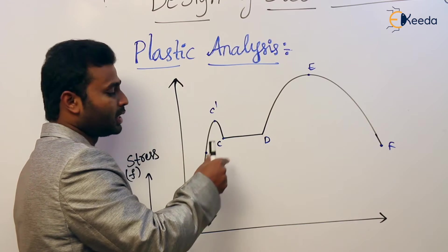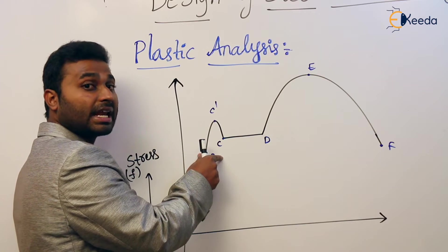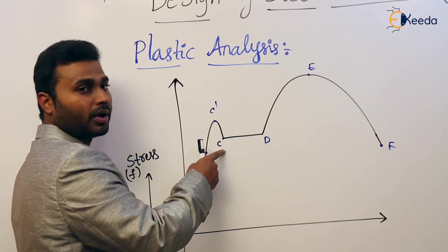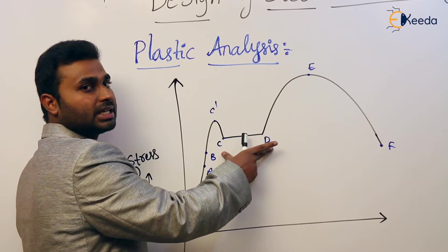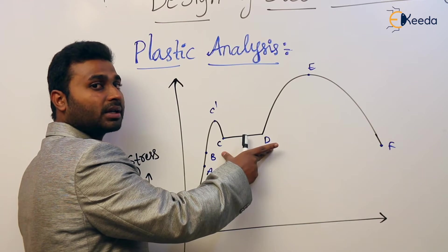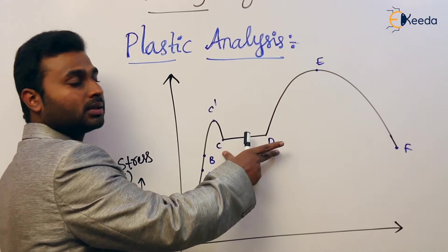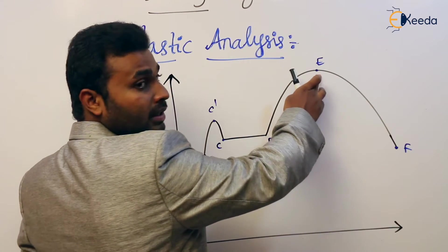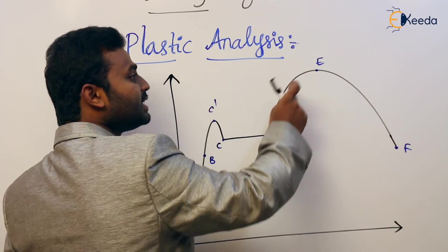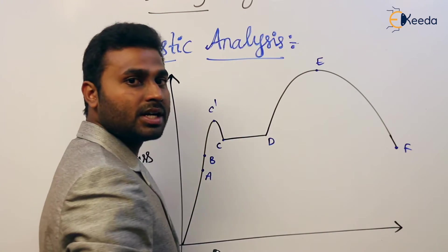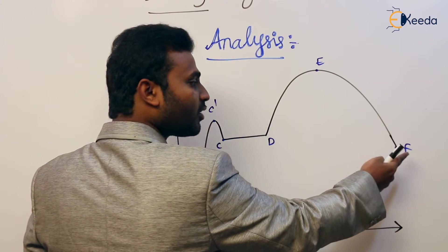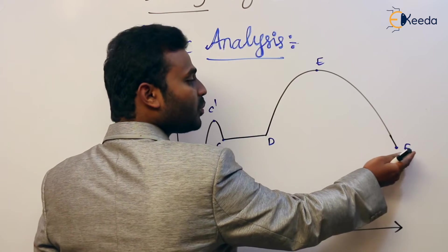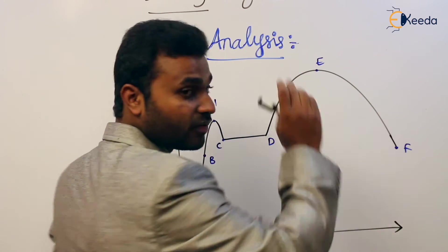C-dash is the upper yield point, and C is the lower yield point. The total zone CD is called the plastic zone, or yield plateau, or permanent set. Point E is the ultimate point, and DE is the strain hardening zone. Point F is the necking point, failure point, or fracture point. The zone EF is the strain softening zone.